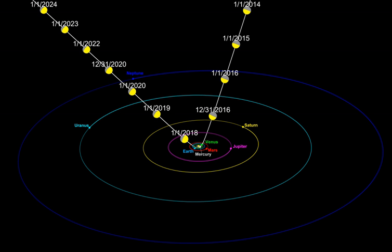It is headed for interstellar space. The first discovered, and only known, interstellar object to date is 1I/2017 U1 'Oumuamua, previously called C/2017 U1 and A/2017 U1. The object has an orbital eccentricity of about 1.20.